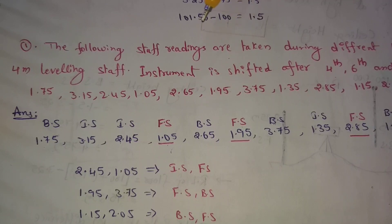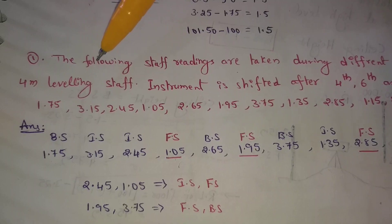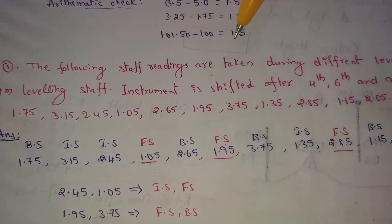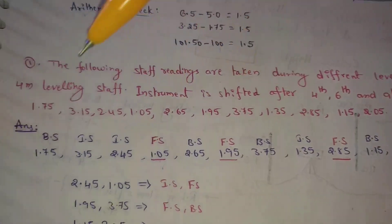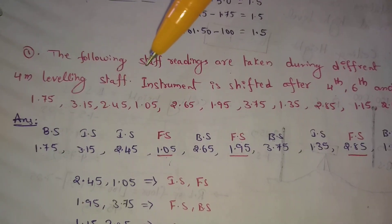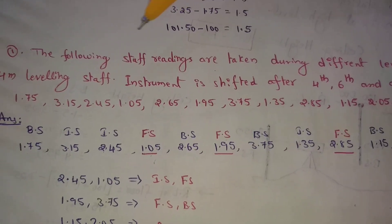How do we do this? Let's look at this small example. The following staff readings are taken during different leveling with a 4-meter leveling staff. If you use a 4-meter leveling staff, you can use different levels to find out.